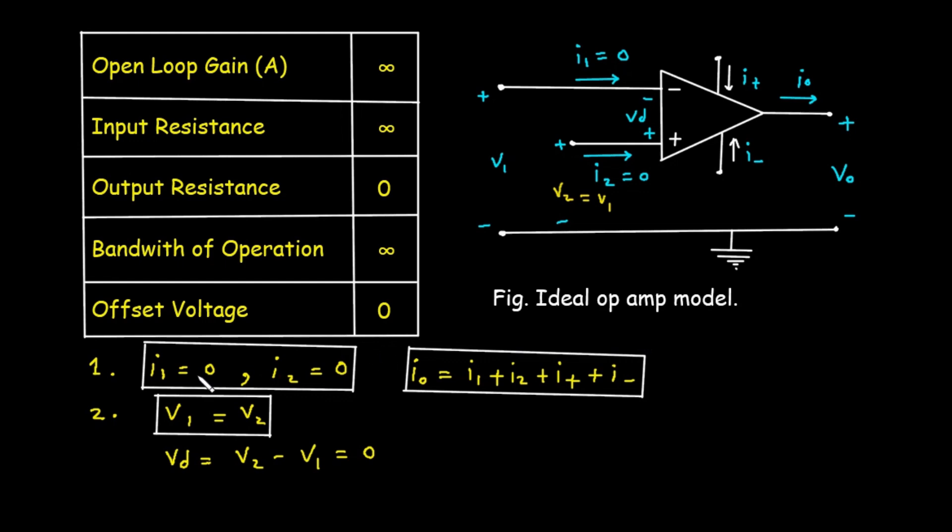The first golden rule is this: I1 equals 0 and I2 equals 0. As we know that the input resistance is infinite, the value of input current I1 and the value of input current I2 should be 0 because the input resistance is infinite. This rule came directly from ideal characteristics of infinite input resistance, RI equals infinite. If the resistance is infinite, Ohm's law, according to Ohm's law we know that voltage equals current times resistance or I equals V by R, tells us that no current can flow into the input terminals. This dramatically simplifies circuit analysis, especially when using techniques like KCL at the input nodes.